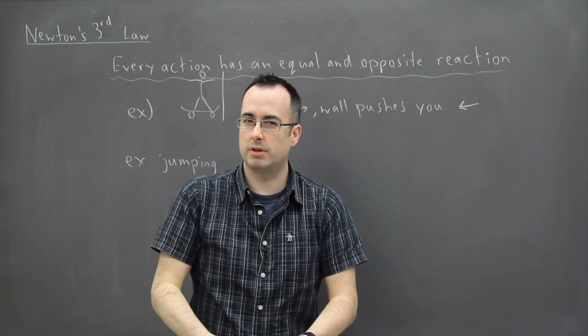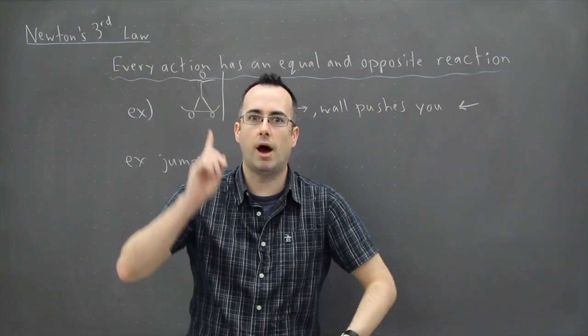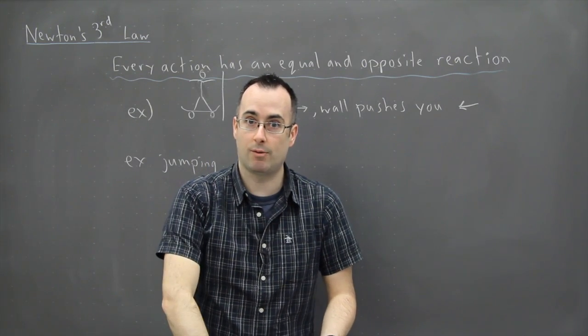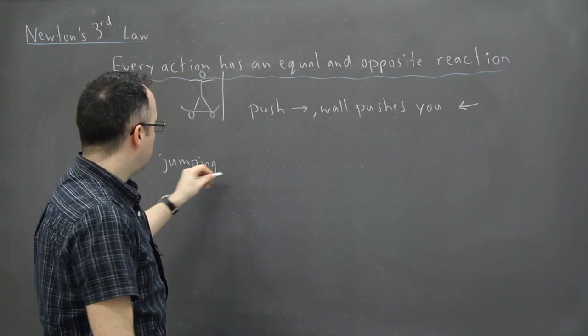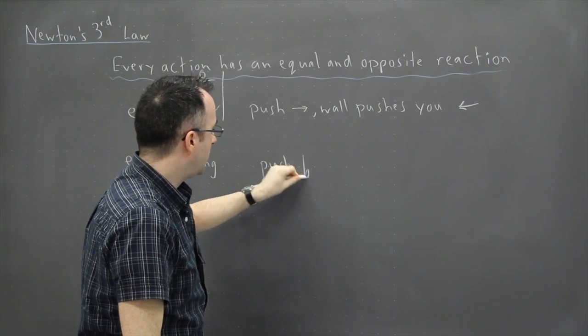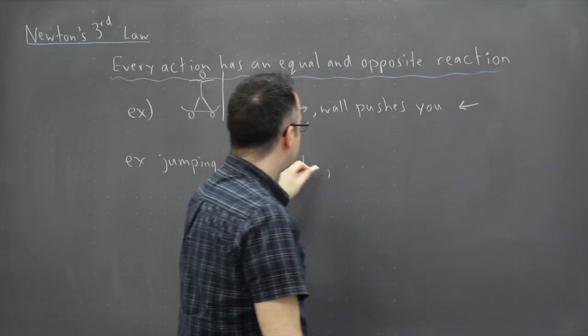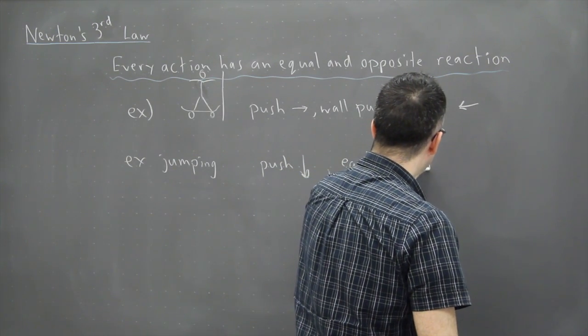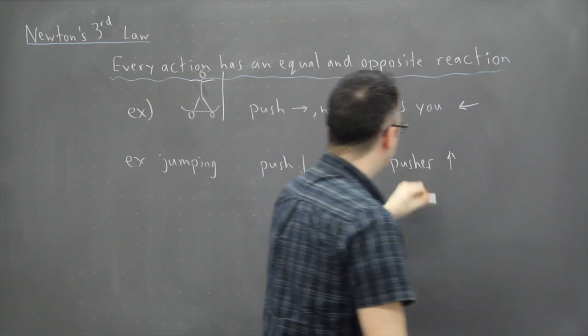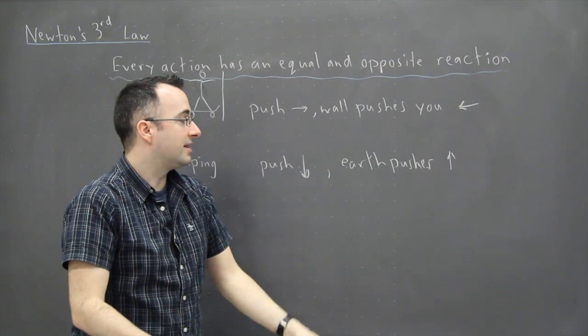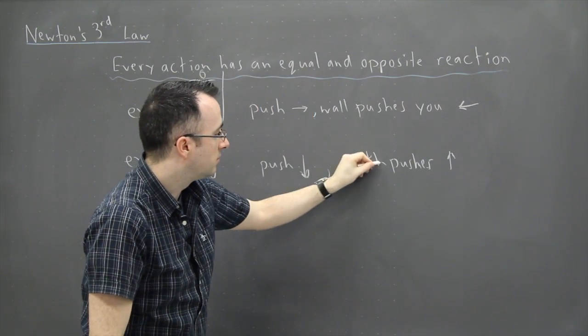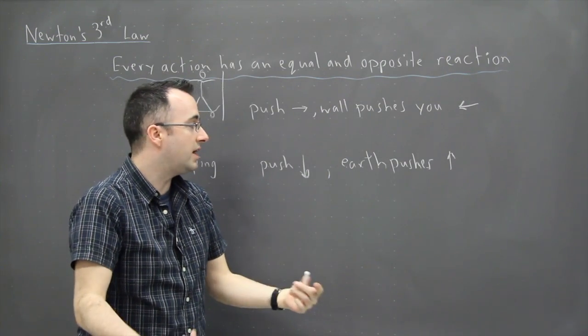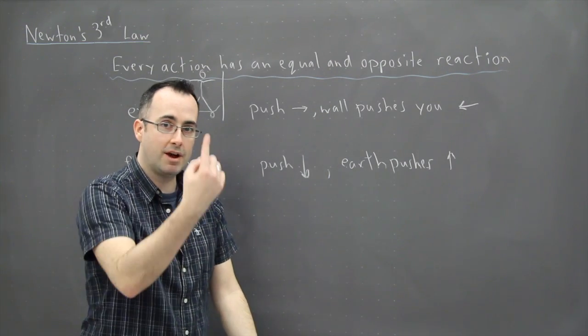Now think very carefully about what you do though. In order to jump, you want to go up, and yet what do you do with your legs? You actually push down. So to jump, you push down, and the earth pushes up. So in this case, you're pushing down on the ground, and the ground in that sense, or we should be careful about this, the earth technically has an opposite reaction with you, and that's why you actually go up.